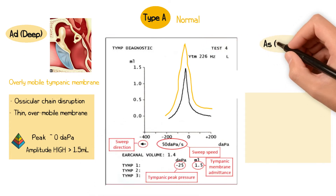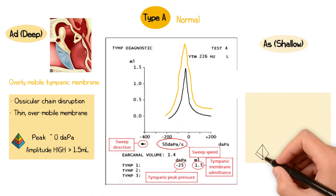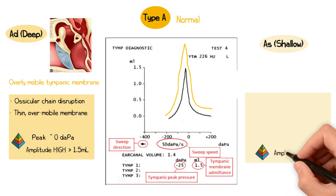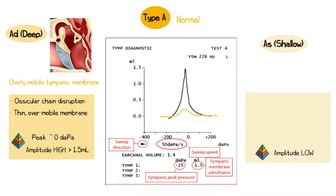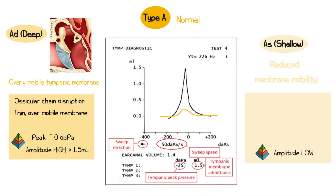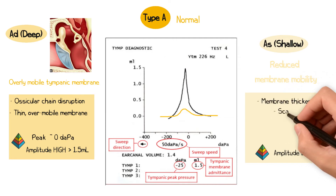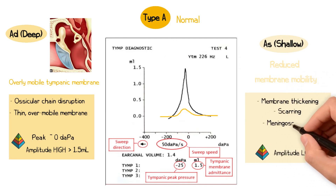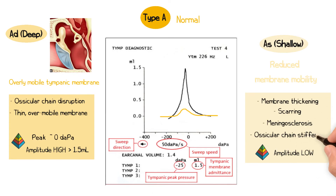In contrast, a type AS, or shallow trace, indicates a low amplitude peak with reduced tympanic membrane mobility. This may occur due to tympanic membrane thickening from scarring or myringosclerosis, or potentially from stiffening of the ossicular chain.